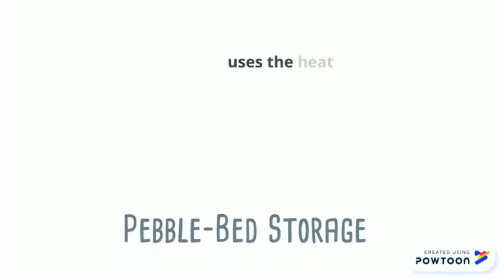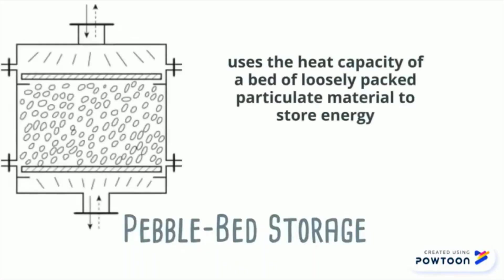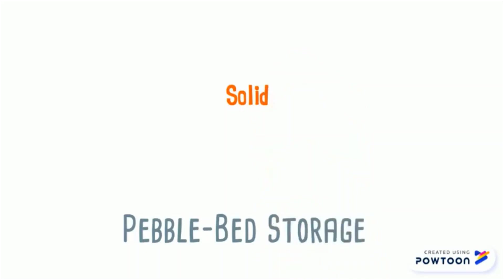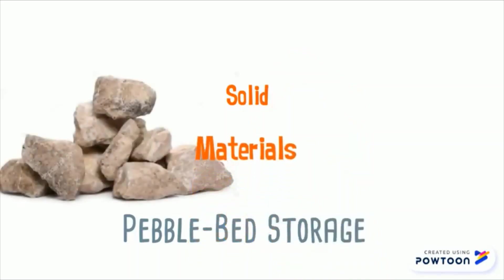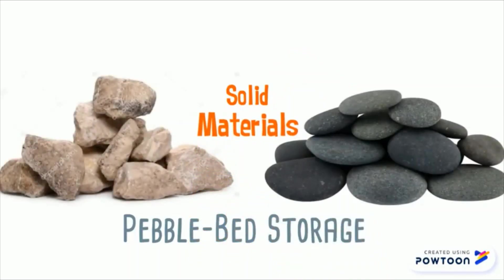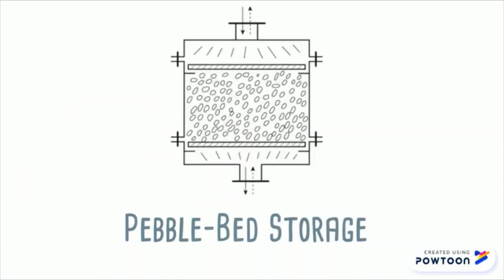A pebble bed storage unit uses the heat capacity of loosely packed particulate material to store energy. A fluid, usually air, is circulated through the bed to add or remove energy. A variety of solids may be used, with rock and pebble being the most widely used materials. In operation, flow is maintained through the bed in one direction during addition of heat, and in the opposite direction during removal of heat.